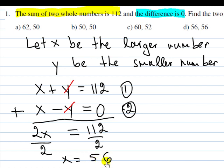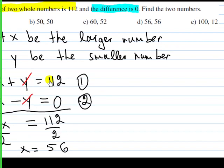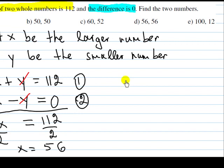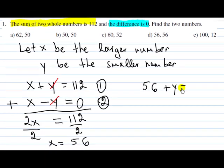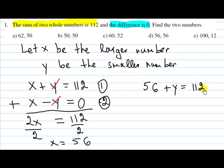Now to find the smaller number y, we can substitute this x equals 56 either in the first or in the second equation. Let's substitute in the first one. That will give us 56 plus y equals 112 and subtracting 56 on both sides, we will get that y equals 112 minus 56, which of course is 56.